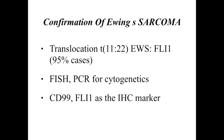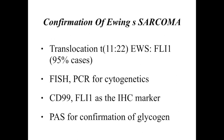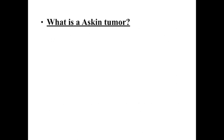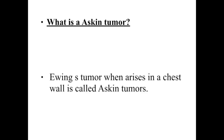And of course, for demonstration of glycogen you can use the PAS stain. Before I end, I would also like to mention a possible exam question: what is an Askin tumor? It is the name given to an Ewing's or PNET tumor that arises in the chest wall.